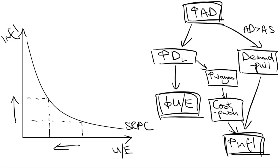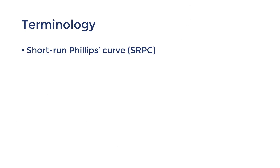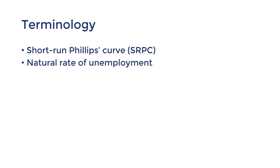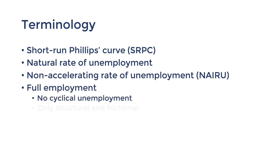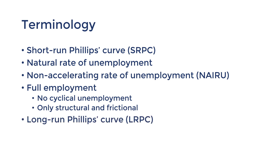However, in the long run, there's no trade-off between unemployment and inflation. That is, we can try to decrease unemployment and increase inflation, but unemployment will revert back to what's called the natural unemployment rate. It's also known as the non-accelerating inflation rate of unemployment, or NAIRU. This rate of unemployment is often where there's full employment — where there's no cyclical unemployment, only structural and frictional unemployment. This is illustrated by the long-run Phillips curve.